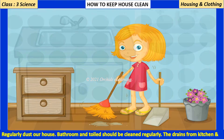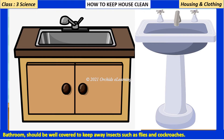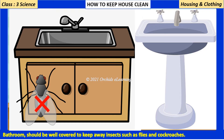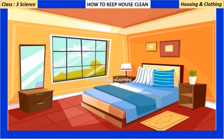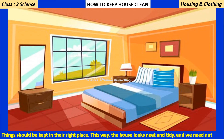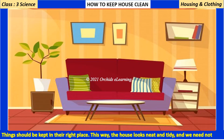We should regularly dust our house. Bathrooms and toilets should be cleaned regularly. The drains from the kitchen and bathroom should be well covered to keep away insects such as flies and cockroaches. Things should be kept in their right place — this way the house looks neat and tidy, and we don't waste time looking for things.